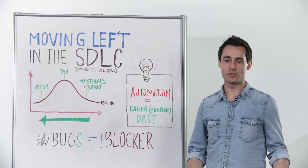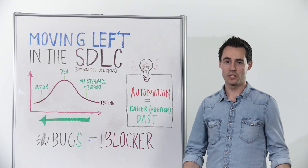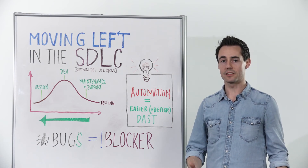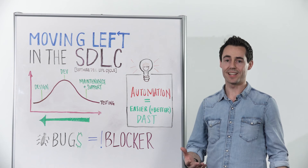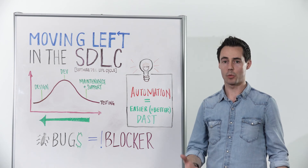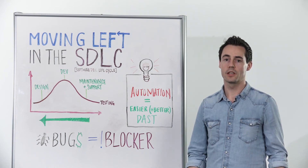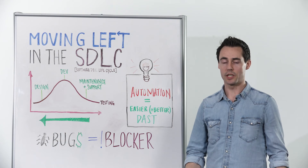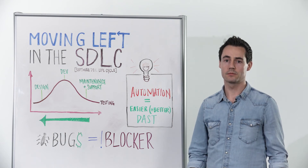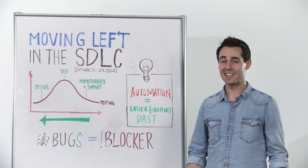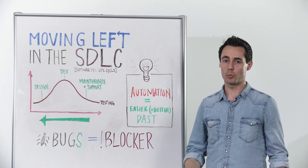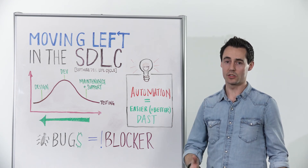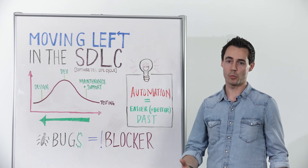Now, the flip side is that you'll see more bugs. But having that information early lets you make decisions without instantly compromising deadlines. A bug you find early doesn't have to be a blocker. And a tight deadline to release based on a prior commitment can result in a bug being launched that ultimately becomes a breach.